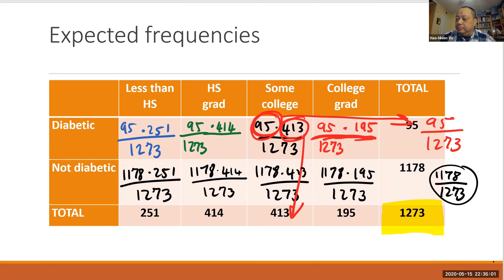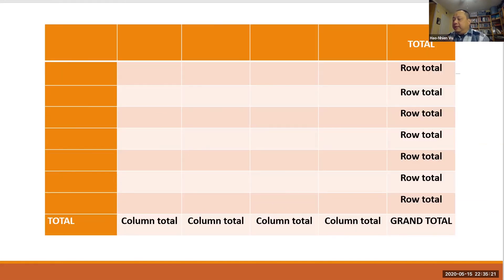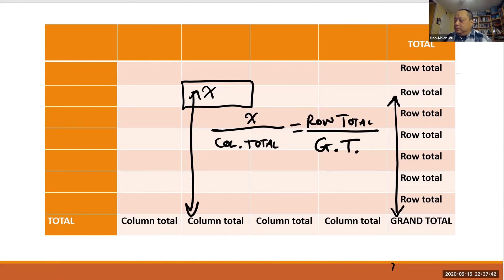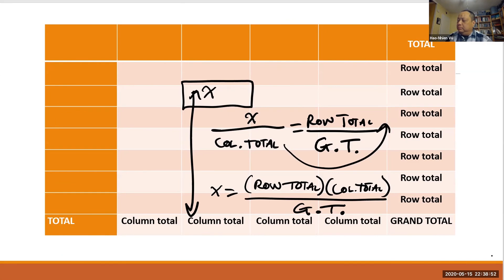Let's prove that the formula should be row total times the column total divided by grand total. Let's take some big table and let's look for the expected frequency in this box. We don't know what the frequency there should be, so we just call it x. If the null hypothesis were true, the proportion of this box to its total should be the same as the overall total for that category divided by the grand total. So in other words, x divided by column total should be equal to row total divided by the grand total. And we solve for x. We multiply both sides by column total and we end up with x equals row total times column total divided by grand total. So there we have it.